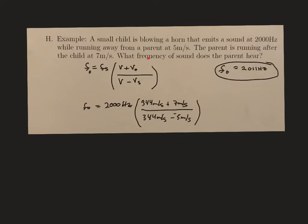So I've written down my Doppler shift equation here. The frequency observed equals the frequency of the source times the quantity: the speed of sound plus the velocity of the observer, divided by the velocity of the sound minus the velocity of the source.